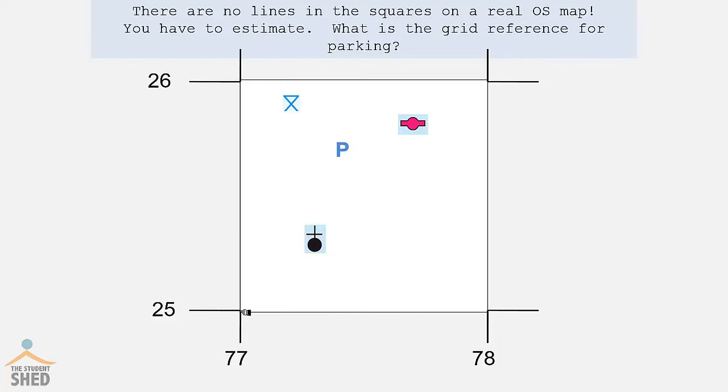Well, the first two numbers for sure are 77. But P is not exactly in the middle. So I would guess 774 for the first three numbers.